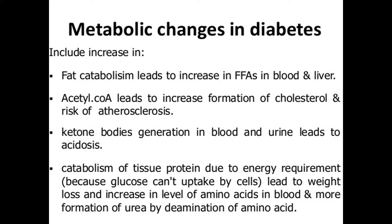Excessive ketone bodies are formed. Although ketone bodies can act as a source of energy for the brain, if they are too many, they lead to diabetic ketoacidosis (DKA). Then there is catabolism of tissue proteins due to energy requirements, because glucose cannot be taken up by cells. This leads to weight loss, increased amino acid levels in blood, and more urea formation by deamination of amino acids.